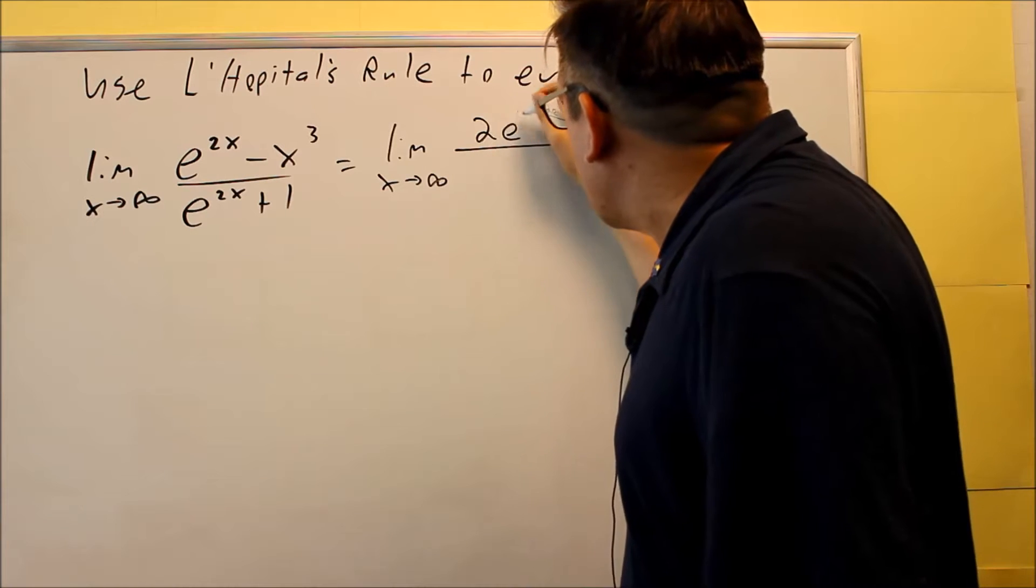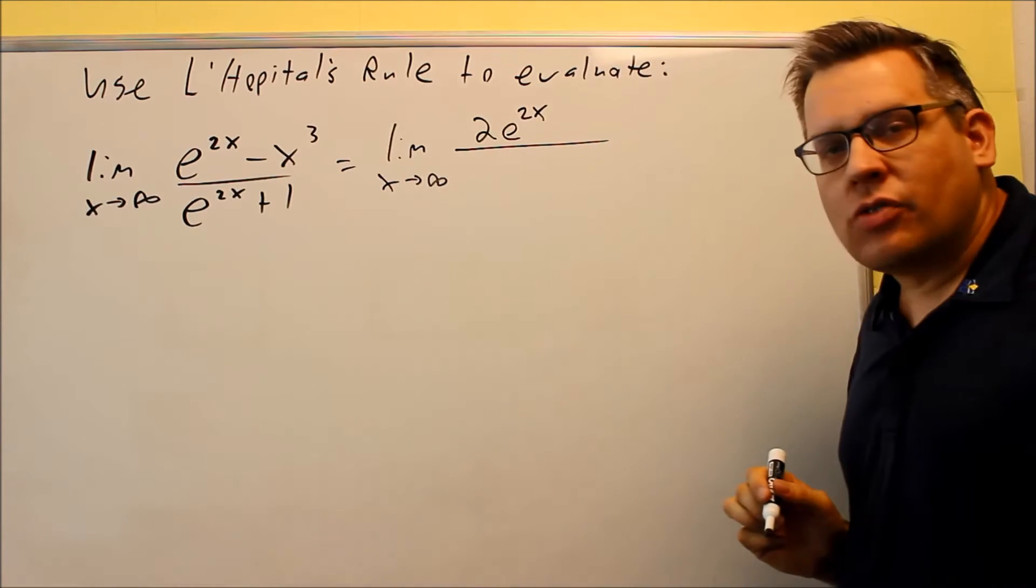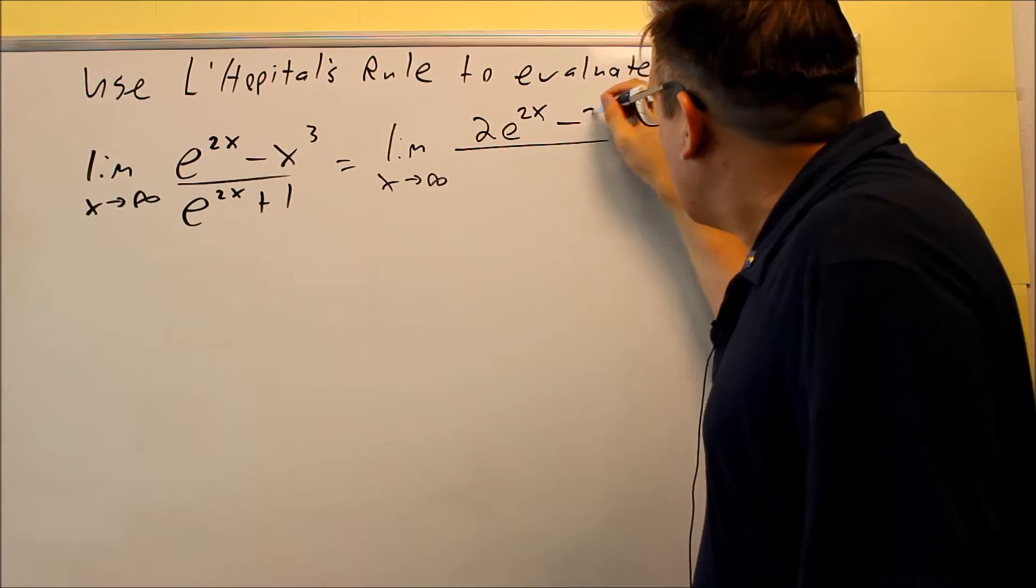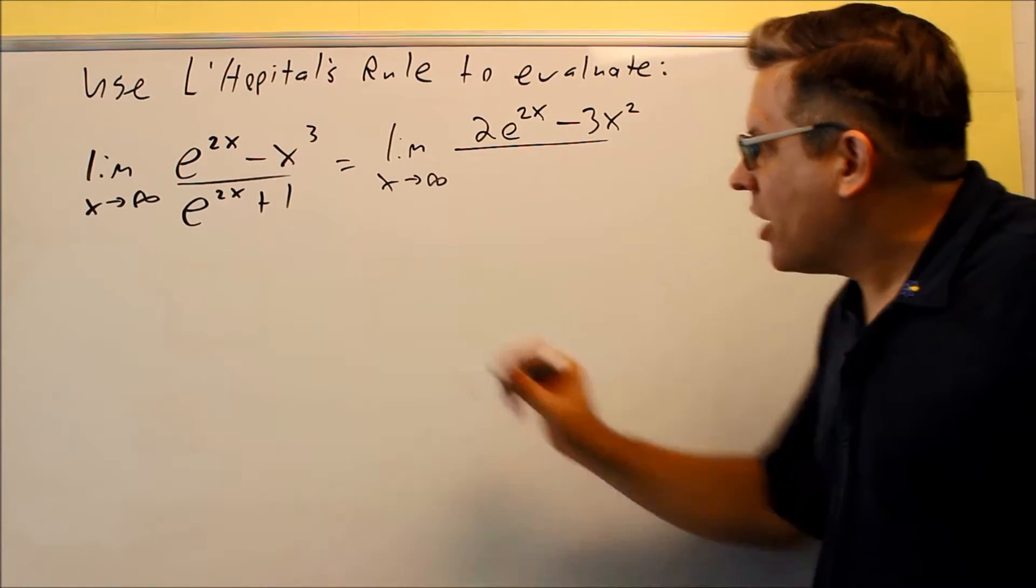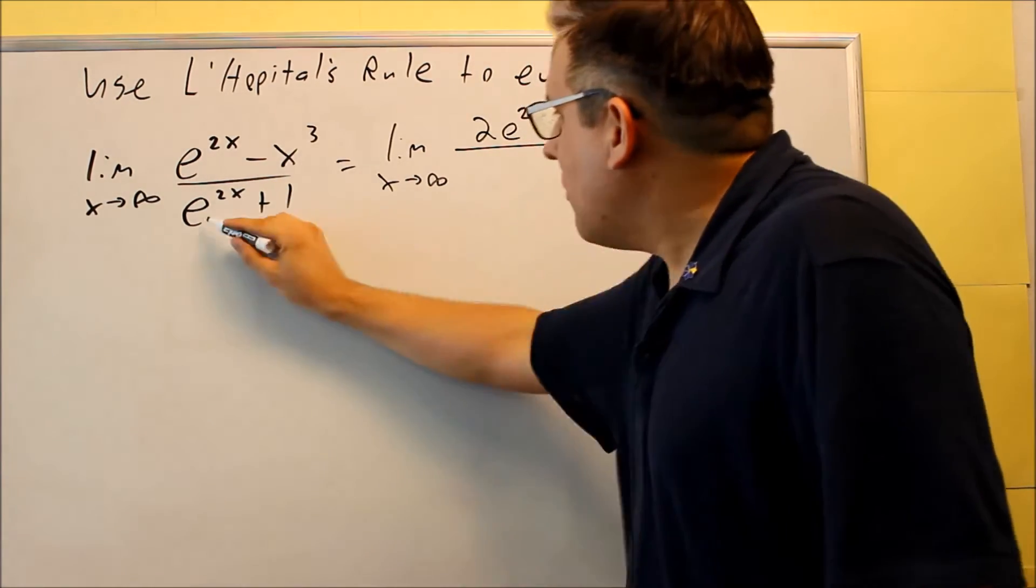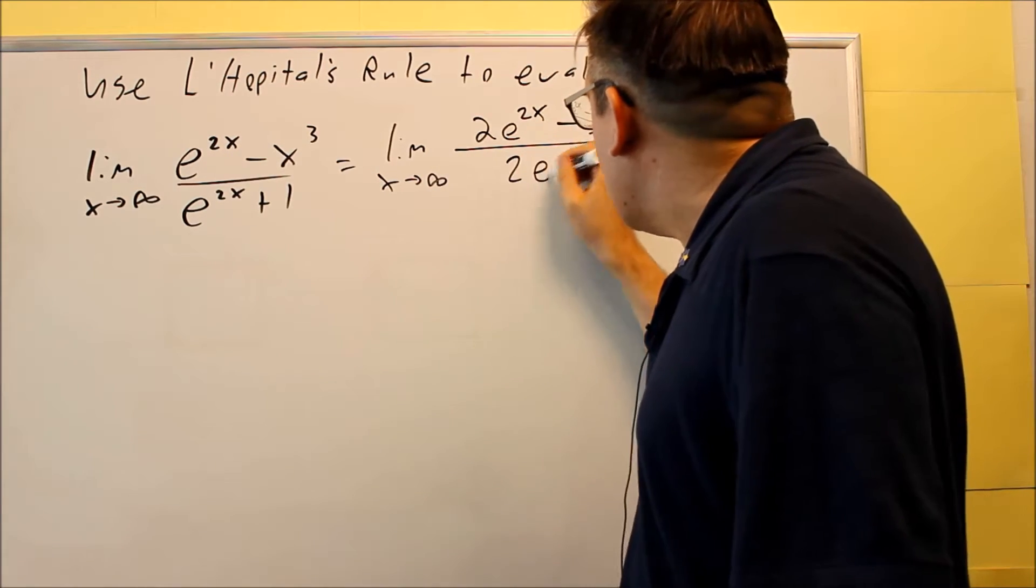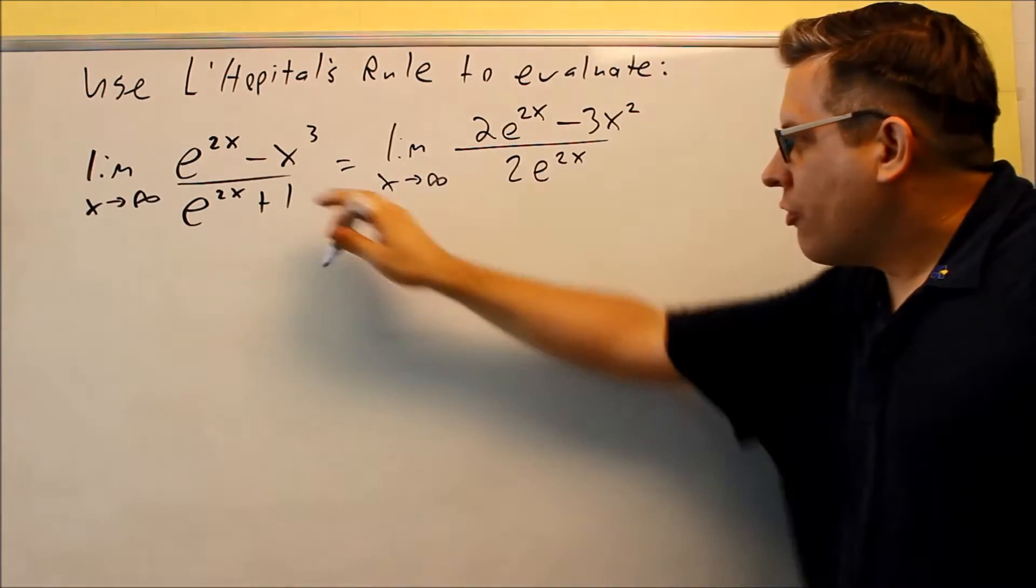So that derivative is going to be 2e to the 2x, and this will be minus 3x squared, and you can use a power rule there. On the bottom, I have the same thing as the top, so this is going to be 2e to the 2x. And then derivative of 1 is going to be 0.